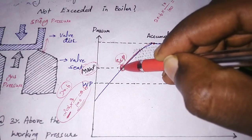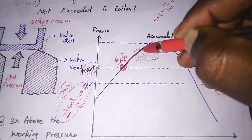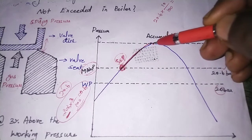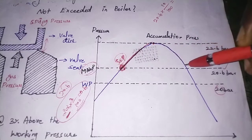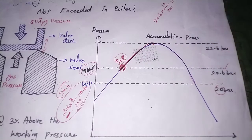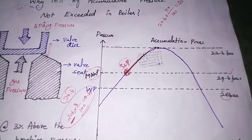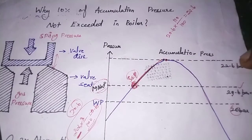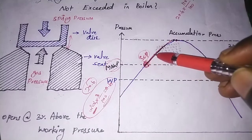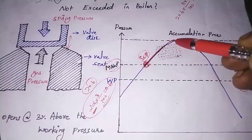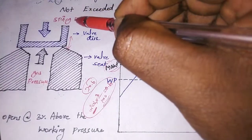Although the safety valve is in the open position, boiler pressure continues to increase. It keeps rising until the boiler reaches the accumulation pressure. Ten percent above 20.6 bar is 22.6 bar, so 22.6 bar is the accumulation pressure.